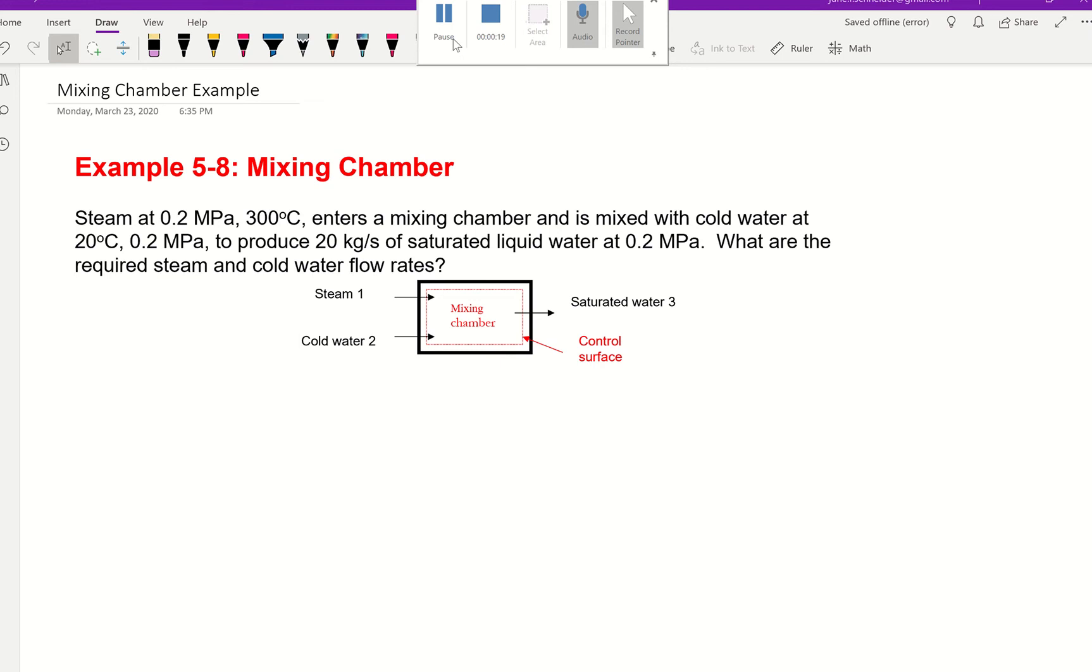So we have steam at 0.2 MPa and 300°C that comes in and mixes with cold water at 20°C and 0.2 MPa. They need to produce 20 kg/s, that's going to be our mass flow rate, so ṁ₃ = 20 kg/s.